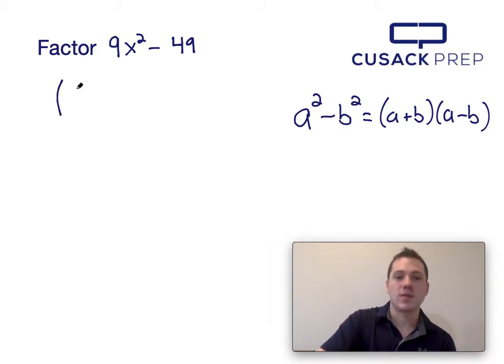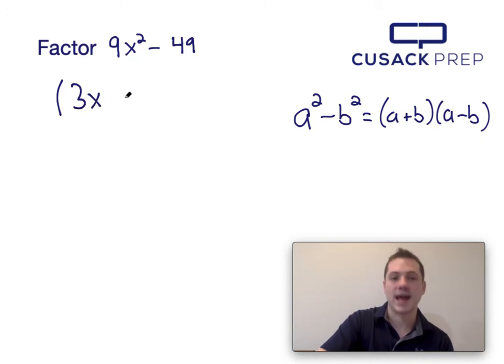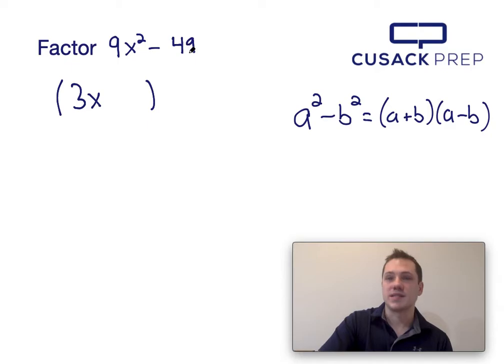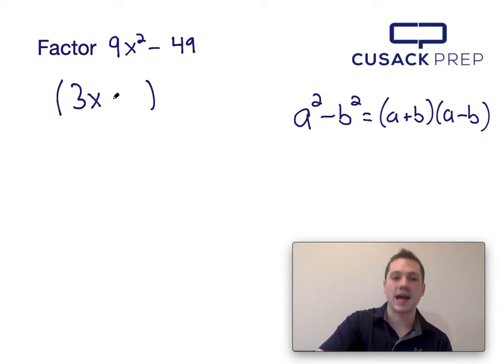The square root of 9x squared is 3x. And if b squared is in the same position as 49, I can figure out what b is by taking the square root of 49, which is 7.